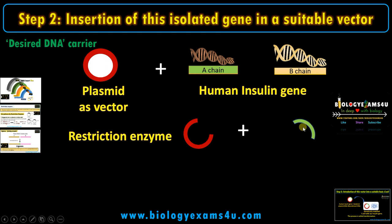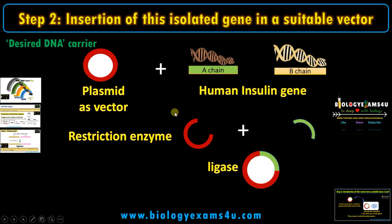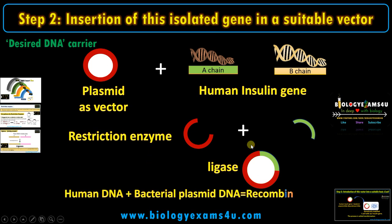Once we have inserted our gene of interest, forming a recombinant DNA molecule, there will be a missing phosphodiester bond — that nick is sealed by an enzyme called ligase. Ligases are joining enzymes. These two DNA fragments are joined by the enzyme ligase, and the process is called ligation; the bond formed is the phosphodiester bond. In short: we cut the plasmid vector using a restriction enzyme, inserted our gene of interest forming a recombinant DNA molecule, and the nick is sealed by ligase. We now have a recombinant DNA molecule — DNA from two different sources: human insulin gene DNA and bacterial plasmid DNA.